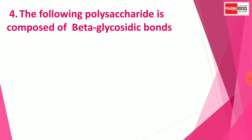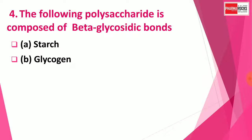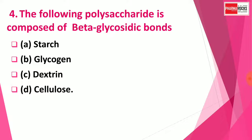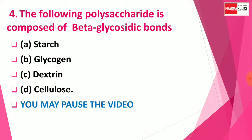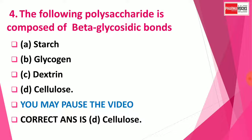Question 4: The following polysaccharide is composed of beta glycosidic bonds — Option A: Starch, Option B: Glycogen, Option C: Dextrin, Option D: Cellulose. You may pause the video to think about the correct answer. The correct answer is Option D: Cellulose. Cellulose is a polysaccharide composed of beta glycosidic bonds.